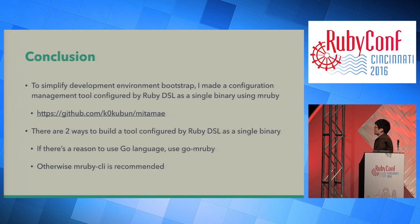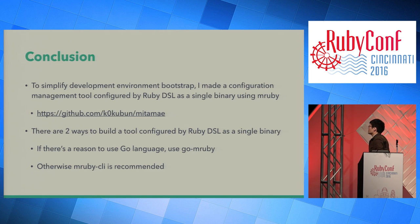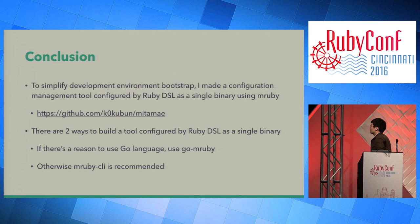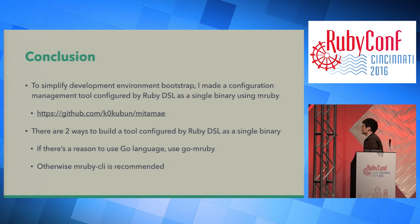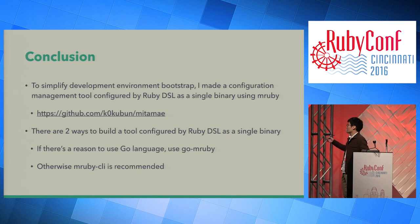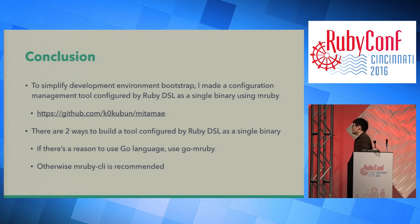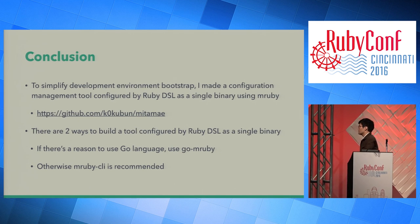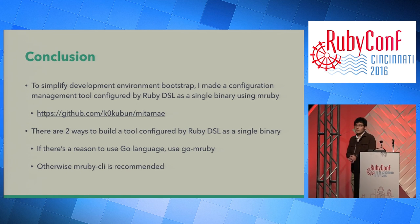In conclusion, to simplify development environment bootstrap, I made a configuration management tool configured by Ruby DSL as a single binary using MRuby, called mItamae on GitHub. There are two ways to build a tool configured by Ruby DSL as a single binary: if there is a specific reason to use Go language, use Go+MRuby; otherwise, MRuby CLI is recommended for that purpose. Thank you.